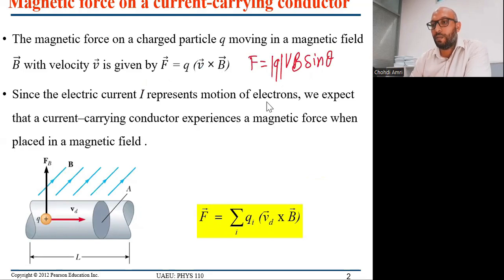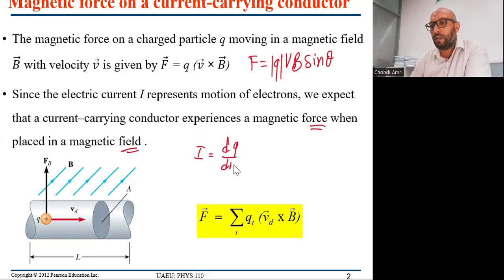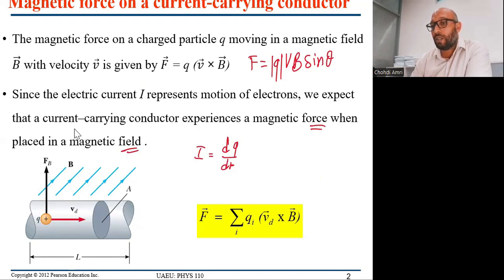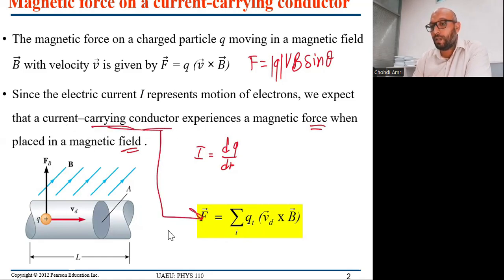Since the electric current I represents the motion of electrons, we expect that a current-carrying conductor experiences a magnetic force when placed in a magnetic field, because the current is dQ/dt. So if there is a force on a point charge Q, then for a conductor carrying a current, the magnetic force is the sum of Q_i multiplied by the drift velocity cross the vector magnetic field.